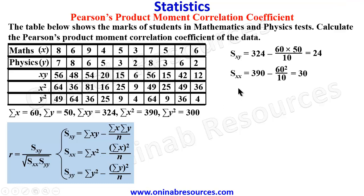So we go for the last one, S_YY, which is Sigma Y squared. Sigma Y squared is 300 minus Sigma Y all squared.